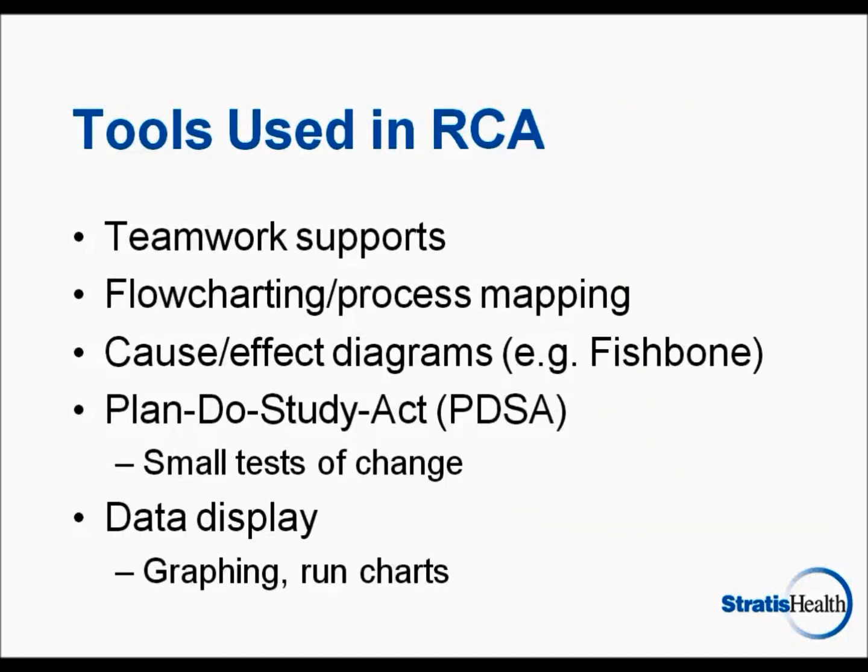There are a number of common quality improvement tools used in RCA. These include teamwork supports such as brainstorming, affinity grouping, and consensus building; flow charting or process mapping; and cause and effect diagrams or fishbones, which are used to identify and classify root causes and contributing factors. The fishbone works well for complex problems, though it takes practice and can get messy quickly. The Plan, Do, Study, Act — or PDSA — is a useful tool in RCA to test and implement process changes, and tools such as run charts and control charts can be useful to monitor success.